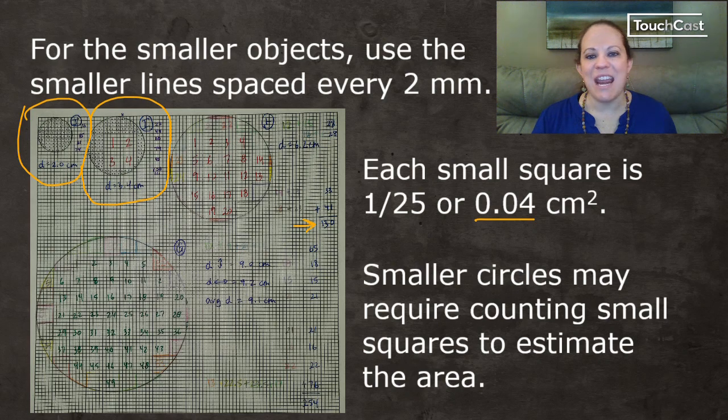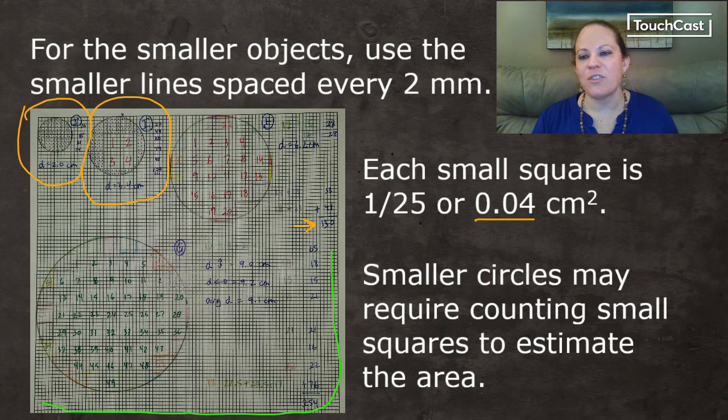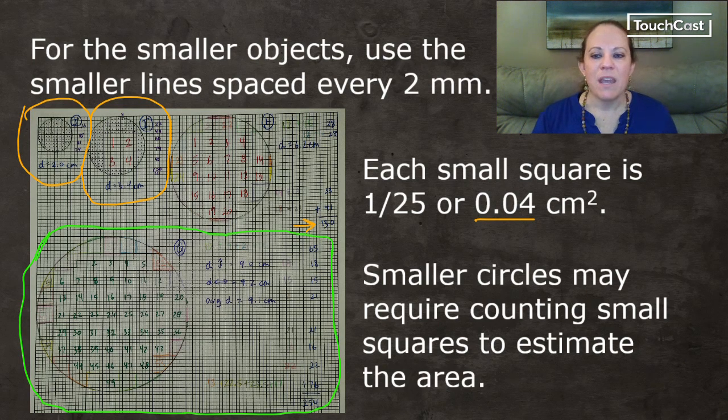For the smaller objects, you don't have a choice but to use the small boxes. Like notice here, this was the bobbin and this was the spool of thread. Notice that the bobbin didn't even include one square centimeter box. So all I could do was count up small boxes and partial boxes. And then once you have the count, here's that 130 that we just saw. I think that was for the Tootsie Roll tin. I had 23 whole squares and then I could take that 130 and multiply it by 0.04 square centimeters for every box. Because of course there are 25 small boxes inside every square centimeter. And so that plus the whole square centimeters that I'd previously counted would give me a pretty good estimate of the area.